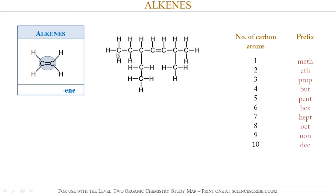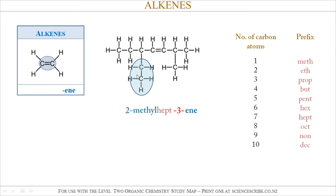Another example: same as before, look for the longest chain. This time my longest chain is still 7 carbon atoms long. It's still an alkene and the double bond is still at position 3, so it's still hept-3-en. This time I have a methyl group at position 2, but I also have a larger group — an ethyl group at position 5. I know it's an ethyl group because it's only 2 carbon atoms long. Two carbon atoms corresponds to 'eth', and we use the letters '-yl' at the end to show that it's a side group.